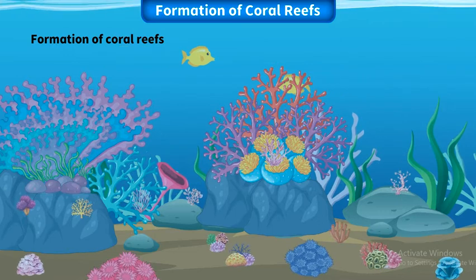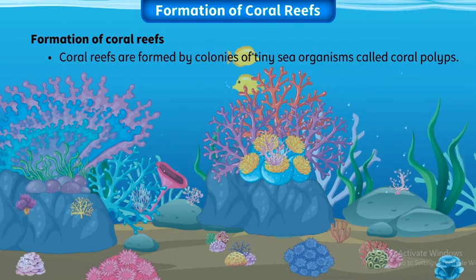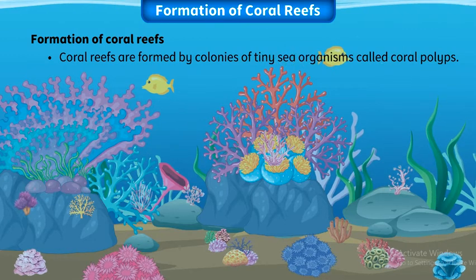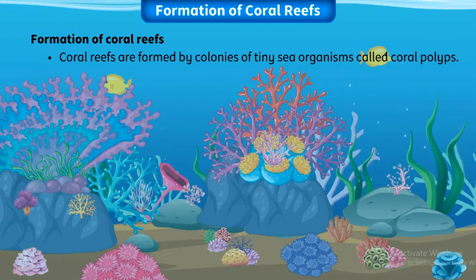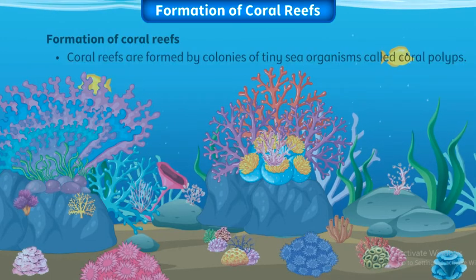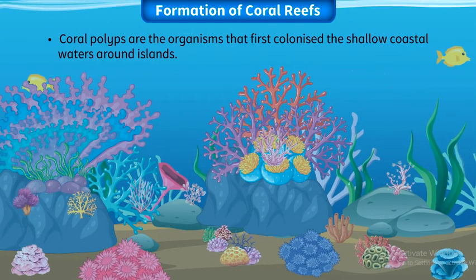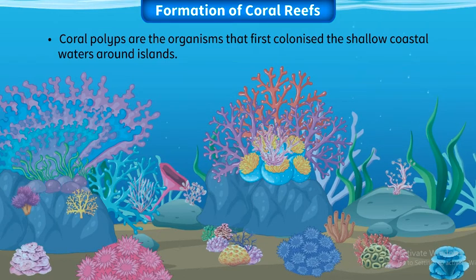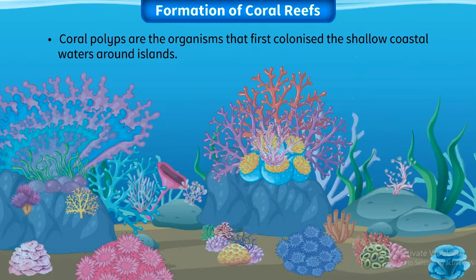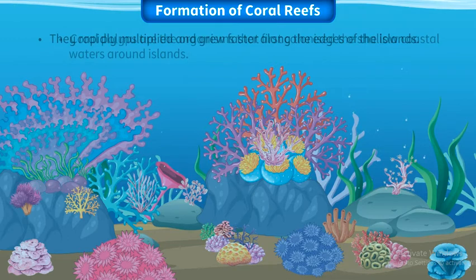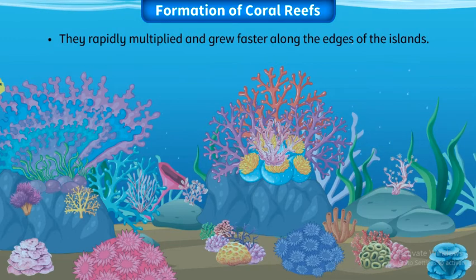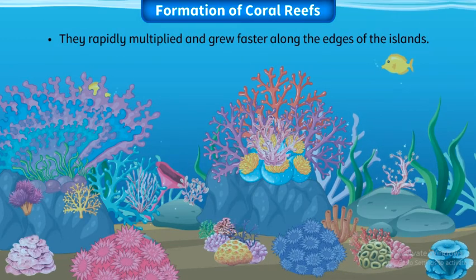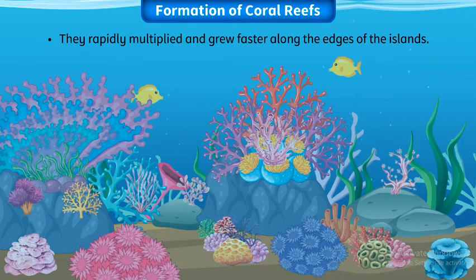Coral reefs are formed by colonies of tiny sea organisms called coral polyps. Coral polyps were the organisms that first colonized the shallow coastal waters around islands. They rapidly multiplied and grew faster along the edges of the islands where the currents were the strongest.